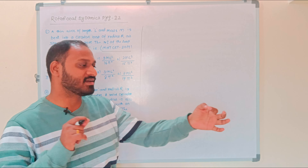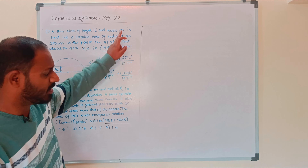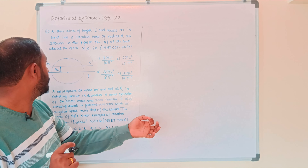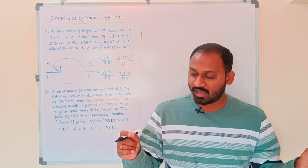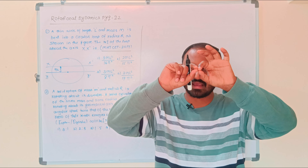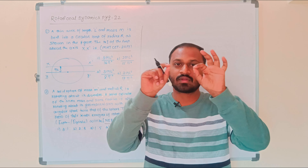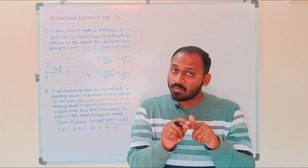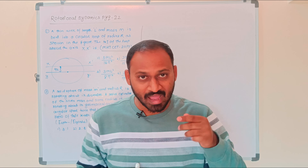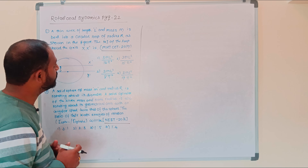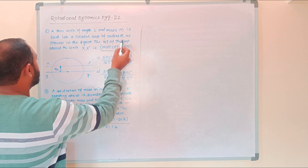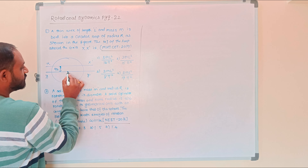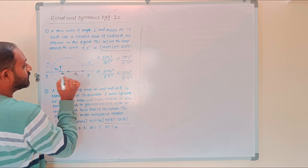A thin wire of length L and mass M is bent into a circular loop. The wire is bent to form a circular loop, which then acts as a ring. The circular loop has a radius shown in the figure as capital R.